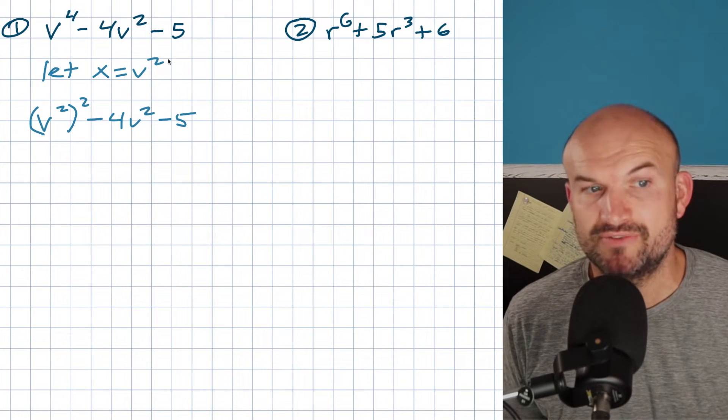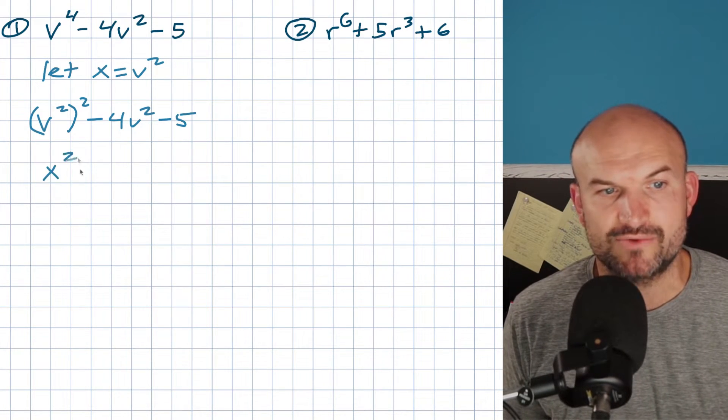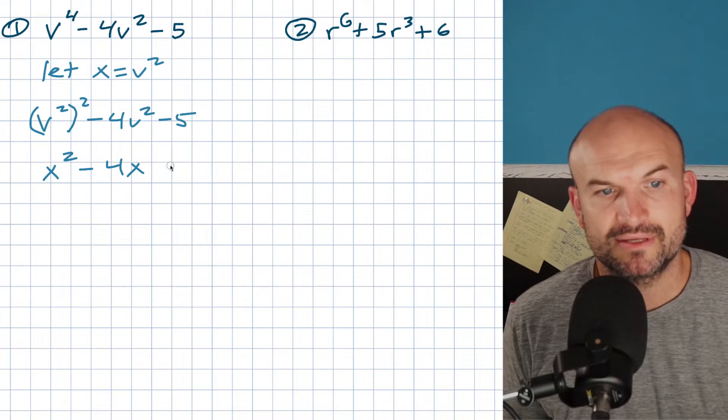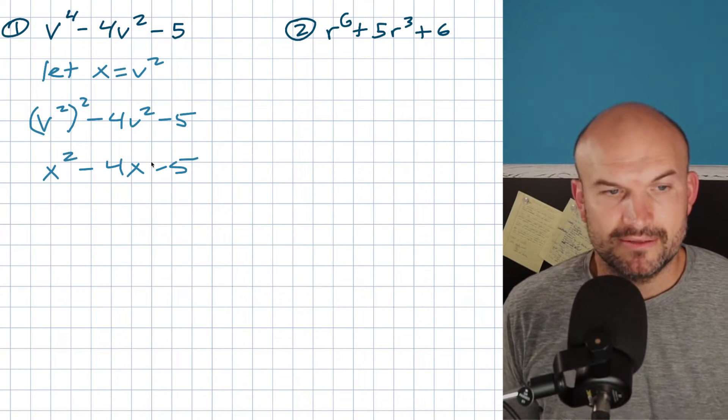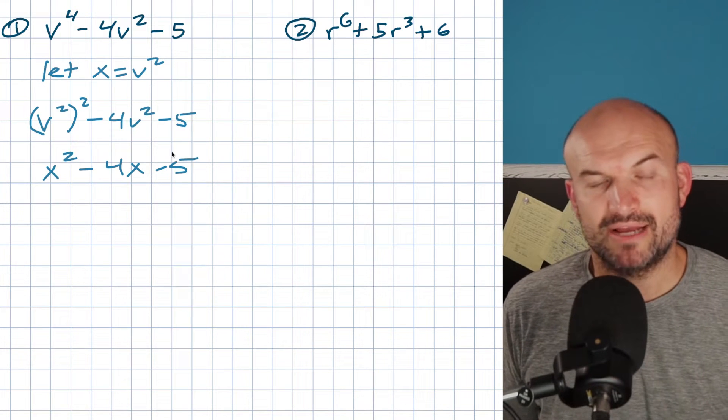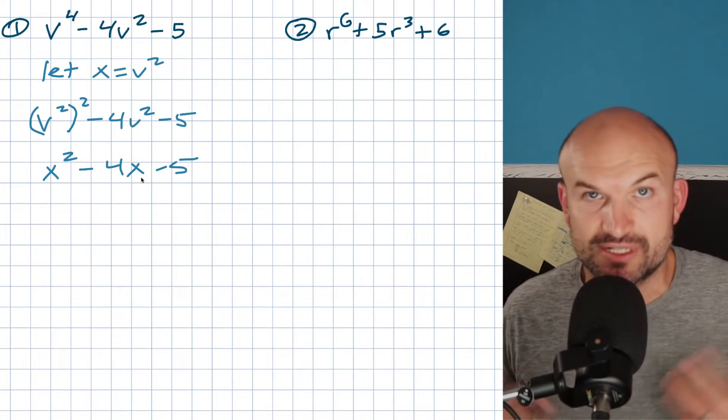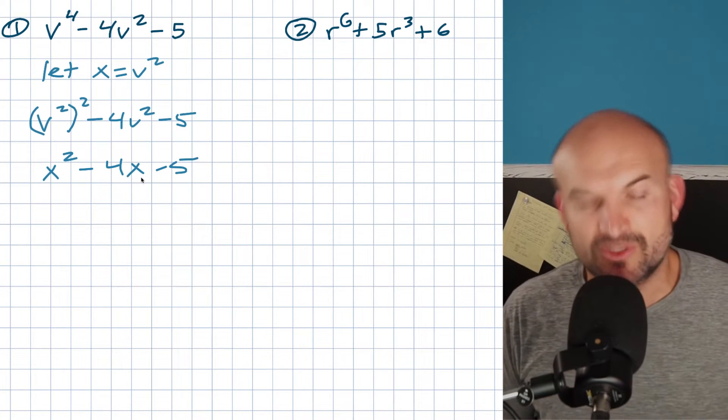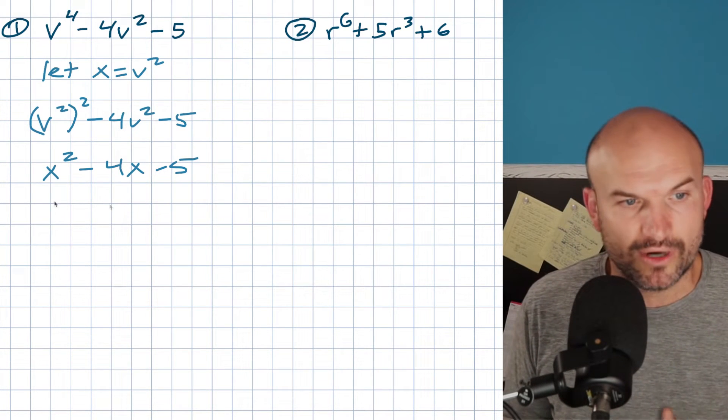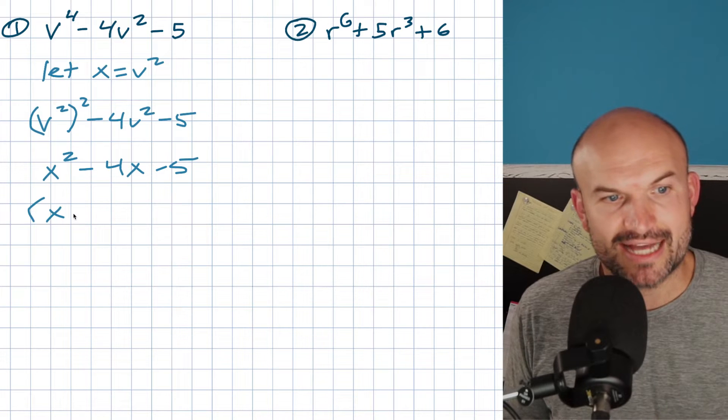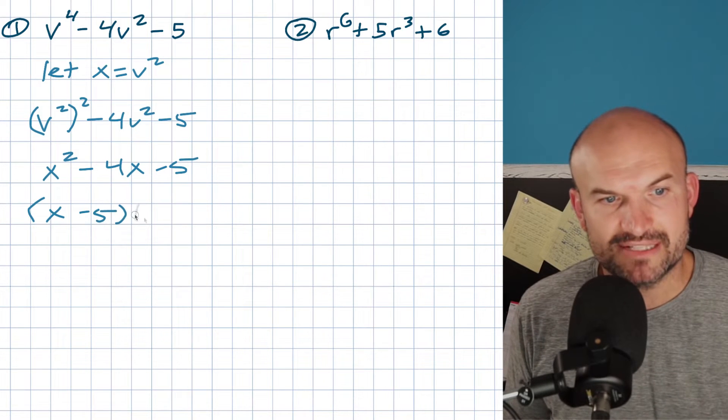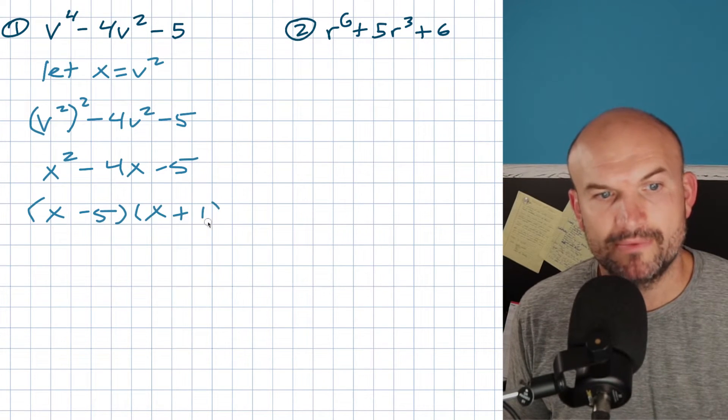Now, hopefully that's something that is factorable. We recognize my last term is negative. When the last term is negative, we're looking for a difference of factors. What two numbers multiply to give you negative 5, add to give you negative 4? Hopefully you recognize that's going to be x minus 5 times x plus 1.